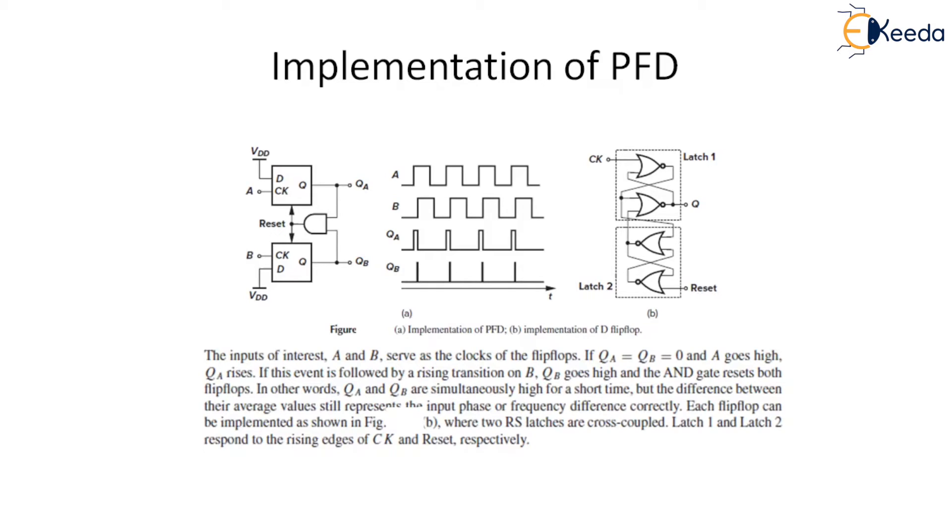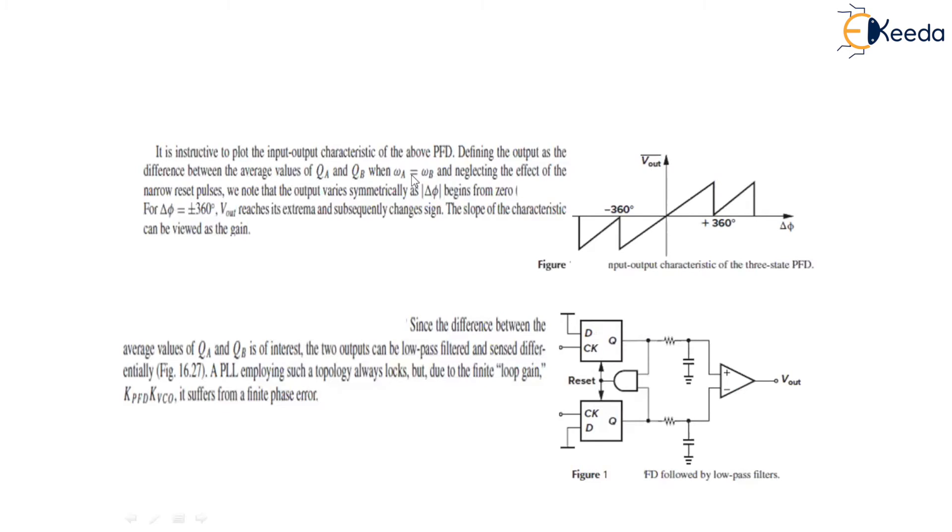Now, defining the output as the difference between the average value of QA and QB, when omega A equals omega B and neglecting the effect of narrow reset pulse, we note that the output varies symmetrically as del phi begins from 0. For del phi having a value of plus minus 360 degree, it reaches its extreme and subsequently changes sign. And the slope of the characteristic can be viewed as the gain. Since the difference between the average value of QA and QB is of interest, the two outputs can be low-pass filtered and sensed differentially as shown here in this figure. A PLL employing such a topology always locks, but due to the finite loop gain, the gain of this PFD and KVCO, it suffers from a finite phase error as well.